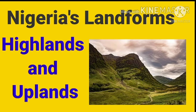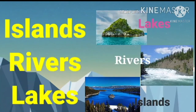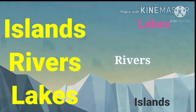Nigerian landforms — we have highlands, uplands, and islands. Highlands are landforms such as mountains, hills, and plateaus, while lowlands are in the southern part. An island is a piece of land completely surrounded by water. We have Bonny Island in Port Harcourt, and then we have Lagos Island, which is one of the most famous islands in Nigeria.